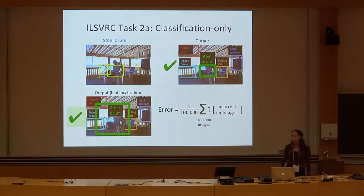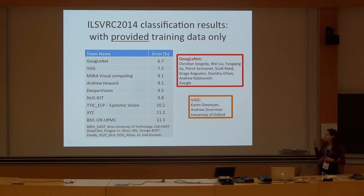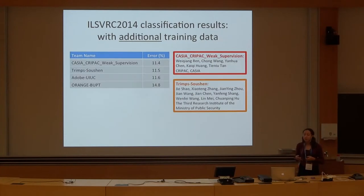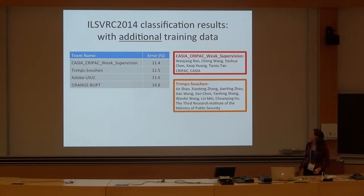The error is averaged across the same 100,000 images. According to this metric, the winner with additional training data was Duplanet, and the runner-up was the Oxford VGG team. When using only the provided training data, the winner was the CRIPHC weak supervision team, which we'll hear from later in the session, and the runner-ups were also recognized.